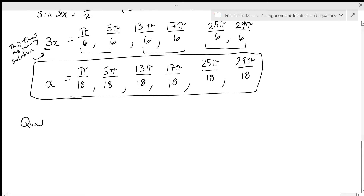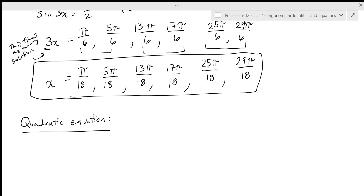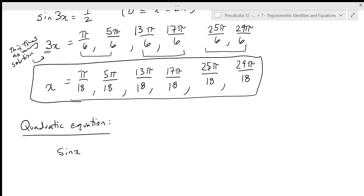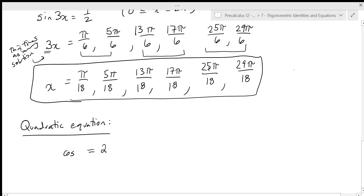With quadratic equations, we're going to do two kinds of examples. The first is a basic one using trig, and the next shows how trig can make it more complicated. Let's say we have cosine x equals two cosine squared of x.